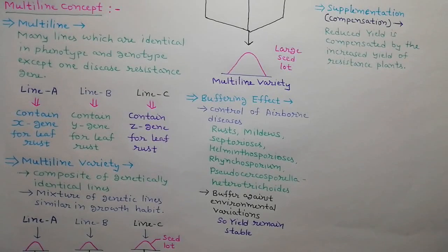The neighboring plants can then use those surplus resources. So the reduced yield of the more susceptible plants is compensated by the increased yield of the more resistant plants.